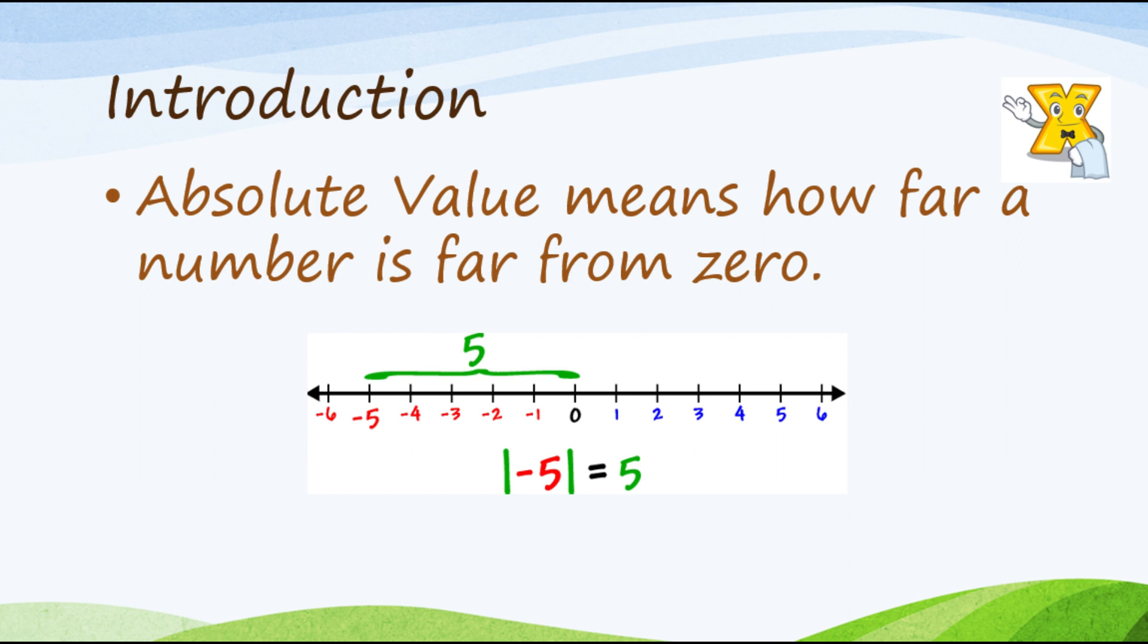Negative 5 papuntang negative 4, it will take you one step. So negative 5 to negative 3, so 2 na yun. Negative 5 to negative 2, tatlo na. Negative 5 to negative 1 is 4. At yung negative 5 to zero, it will take you five steps. So ang sagot sa absolute value ng negative 5 ay 5.